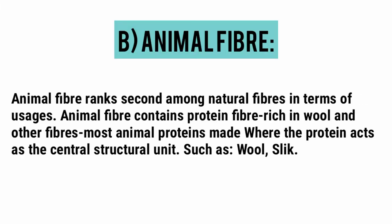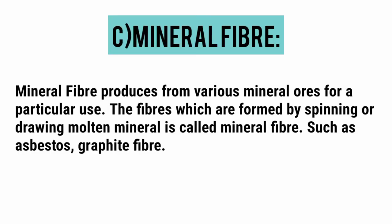Animal fiber ranks second among natural fibers in terms of usage. Animal fiber contains protein fiber rich in wool and other fibers. Most animal proteins are made where the protein acts as the central structural unit, such as wool and silk. Mineral fiber is produced from various mineral ores for a particular use. The fibers which are formed by spinning or drawing molten mineral are called mineral fiber, such as asbestos and graphite fiber.